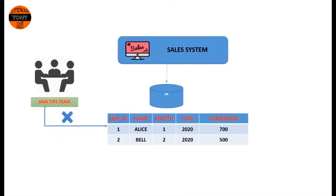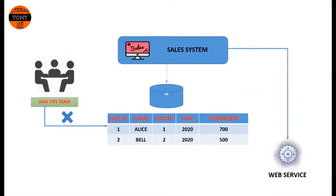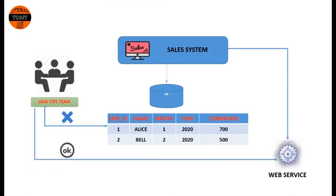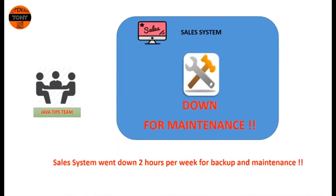The business analyst said that the sales system team cannot give direct access to their database, but they can give us web services which we can consume to get the commission per employee per month. However, there was a problem with the sales system — it went down for two hours per week for backup and maintenance, and that was unacceptable for the company.